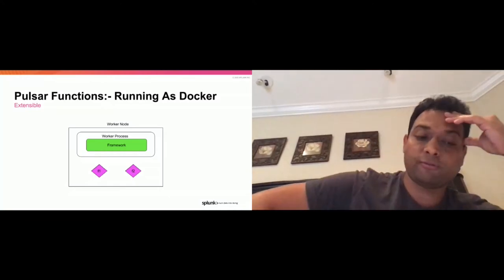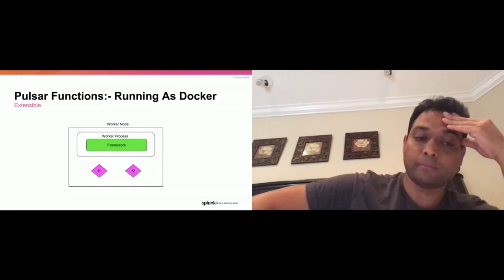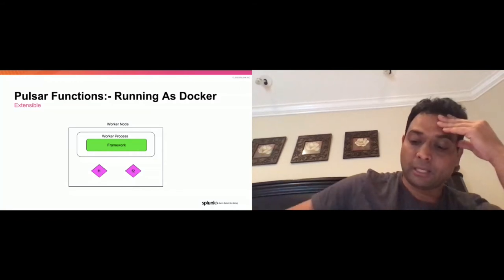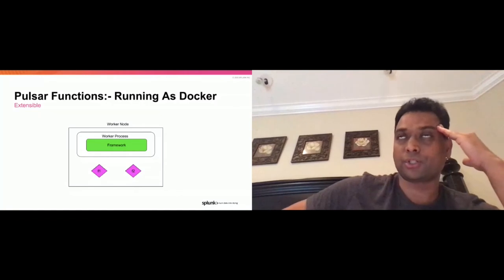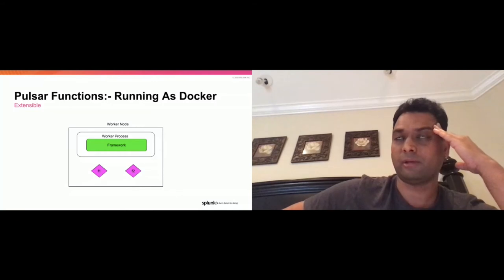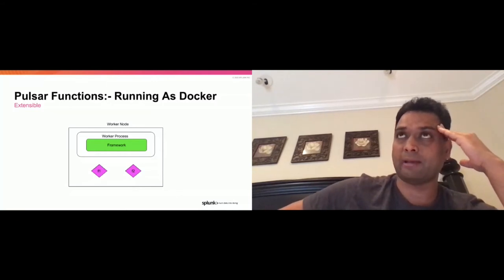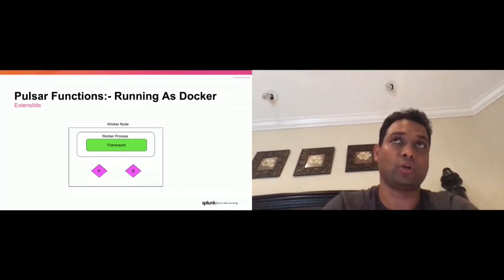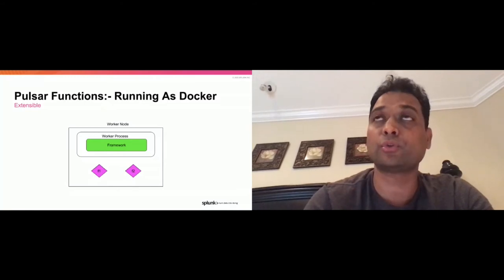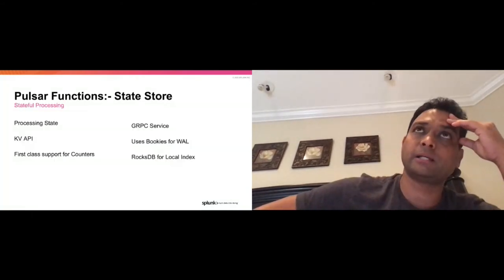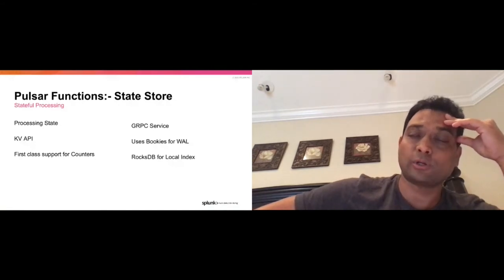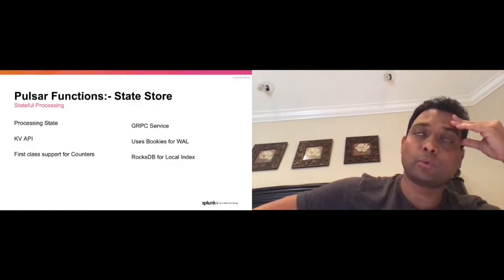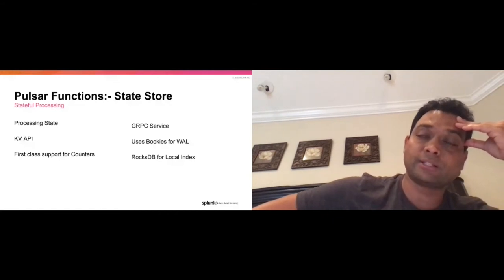One thing we often discuss obliquely in function deployments is the concept of the state store. At the beginning of the talk, I referred to Pulsar Functions as doing stateful processing. Functions can have state — for example, counting how many times I've seen the word 'foo' is a state I need to hold. You could use Redis, Cassandra, or another key-value store, but that's yet another system to manage, set up, and administer. So for these simple use cases, we've rolled our own simple key-value store inside Pulsar itself, which provides a key-value store API used for functions to store state.